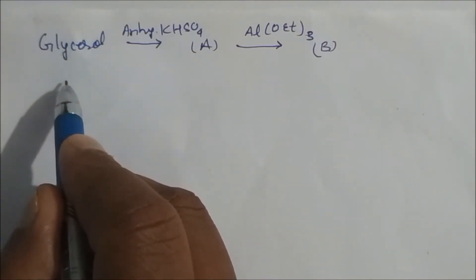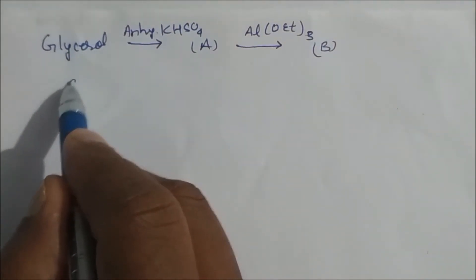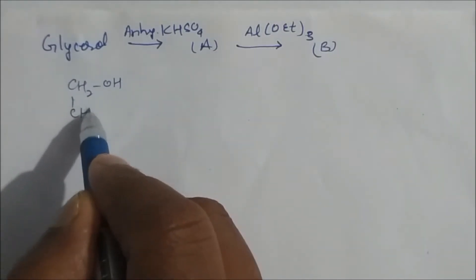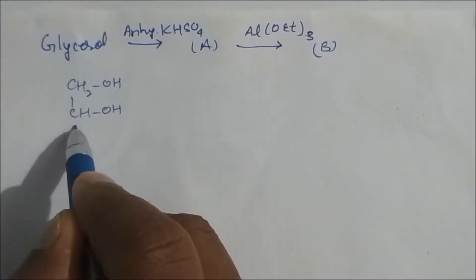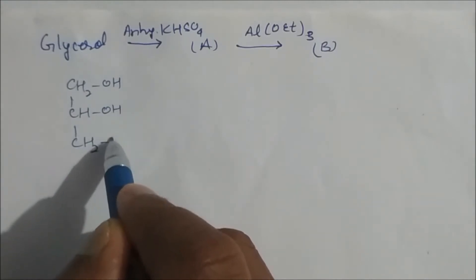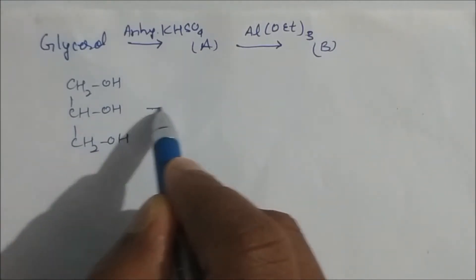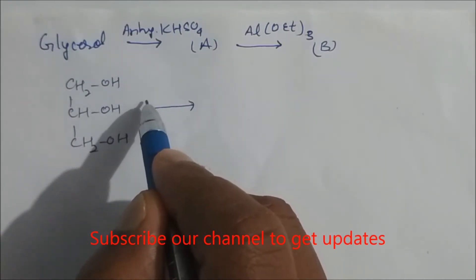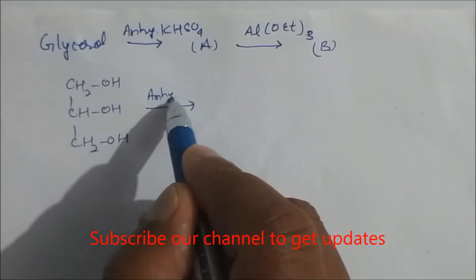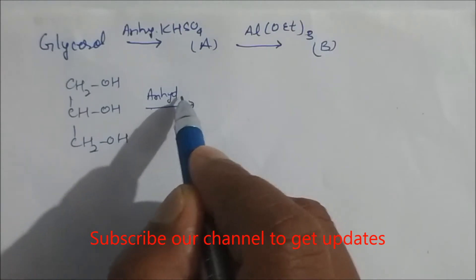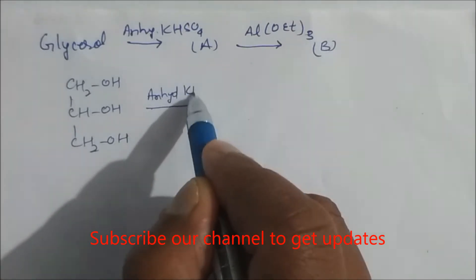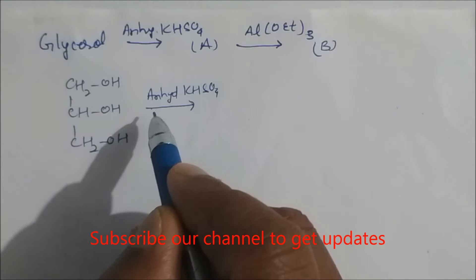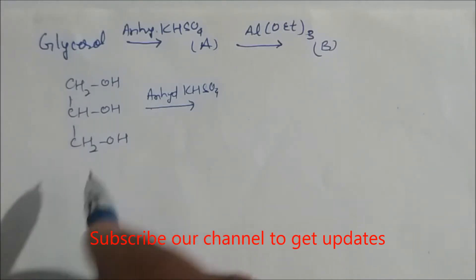First, write the structure of glycerol: CH₂OH, then CHOH — this is the trihydric alcohol — then CH₂OH. In presence of anhydrous potassium bisulfate (KHSO₄), this will undergo a dehydration reaction. Potassium hydrogen bisulfate causes dehydration.